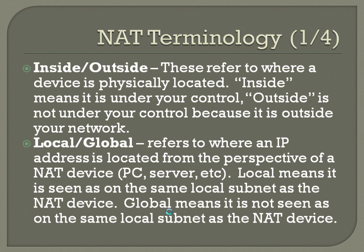The other two sets of terms are local and global. This refers to where an IP address is located from the perspective of a NAT device. Local means it is seen as on the same local subnet as the NAT device. Global means it is not on the same local subnet. Think of local and global as private IP or public IP — if it's on your private LAN it's local, and if it's a public IP, whether your own WAN IP or another public IP on the internet, it's global.